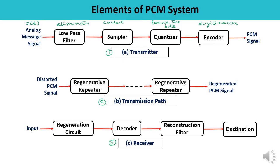Sampling is a very important operation. The analog signal, which is a continuous time signal, is sampled according to the sampling theorem, and at the output we get a discrete time signal. Usually, quantization and encoding operations are performed in the same circuit, which is known as an ADC — analog to digital converter.